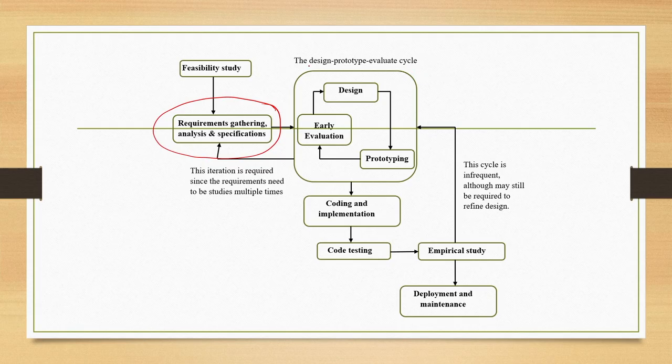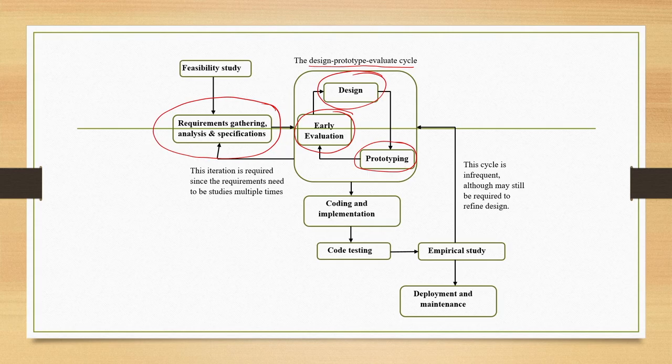Then we have the design-prototype-evaluate cycle, which has three stages: design stage, prototyping stage, and evaluation of the prototype. Design refers to two types: the design of the interface where usability is the primary concern, and the design of the system where execution efficiency is the primary concern. We learned how to create a design of an interface using some design guidelines as a starting point.